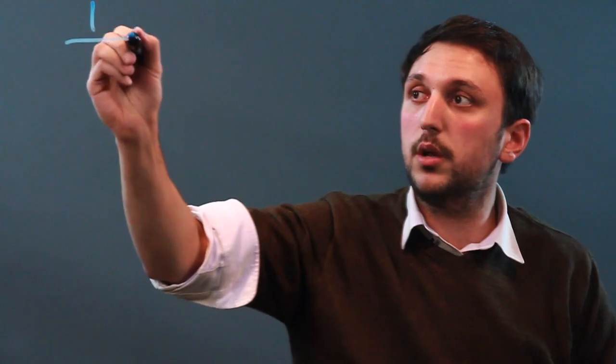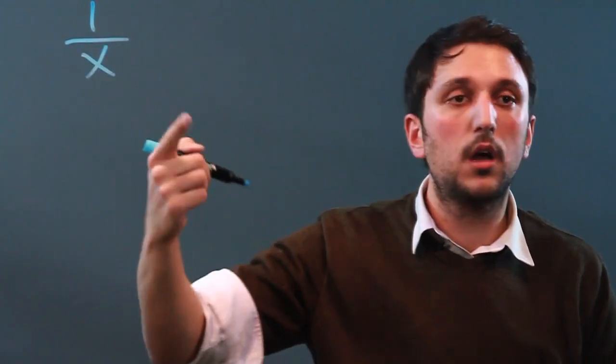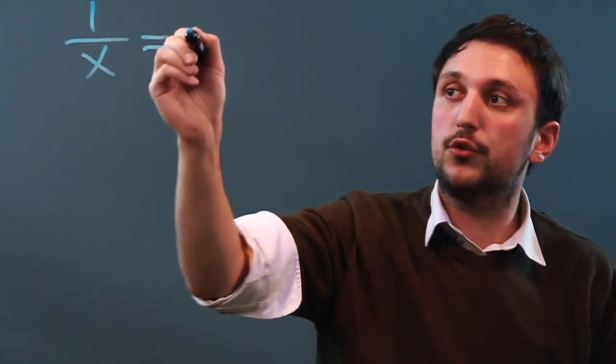Now, to solve for a variable in the denominator, you're dealing with a fraction. So let's pretend we have 1 over x. To solve that, let's say it's equal to 3.